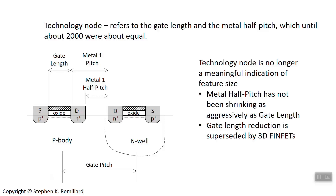So we have two problems with referring to a technology node as so many nanometers. One is that we no longer can say it refers to gate length and metal half pitch. And secondly, it doesn't really refer to gate lengths because the gate length is not needing to shrink anymore with the introduction of FinFETs. Beginning with the 22 nanometer node, it stopped being a good description, and engineers feel like it's been taken over for marketing purposes.